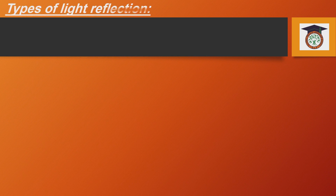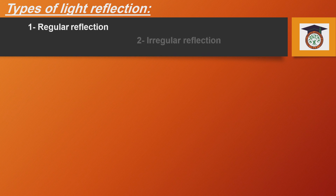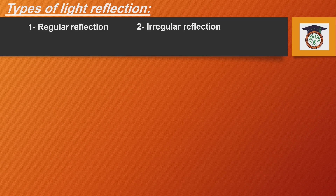Now we are going to talk about the types of light reflection. We have two types: the first is known as regular reflection, and the other type is known as irregular reflection. What is the difference between the two types?